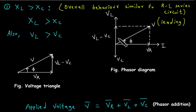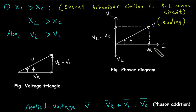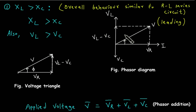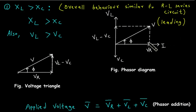This is the phasor diagram for XL greater than Xc. Here we can see that current I is taken as reference. Vr is the voltage drop across resistor R, so it will be in phase. Vl is greater and Vc is smaller, so the net reactive component will be Vl minus Vc, and its resultant will be leading. So the applied voltage V is leading the current I by angle phi.